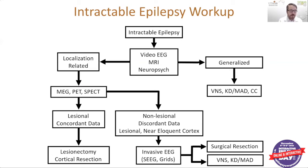So if you're diagnosed with intractable epilepsy, our initial workup typically is going to include video EEG, MRI of the brain, and neuropsych testing. The goal of this initial evaluation is to try to determine whether your epilepsy is localization-related or considered more generalized.